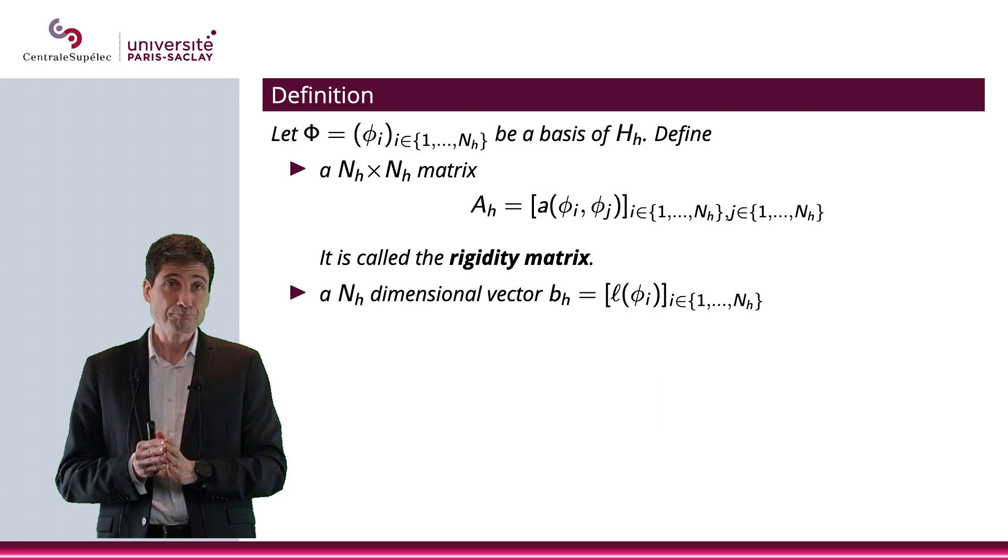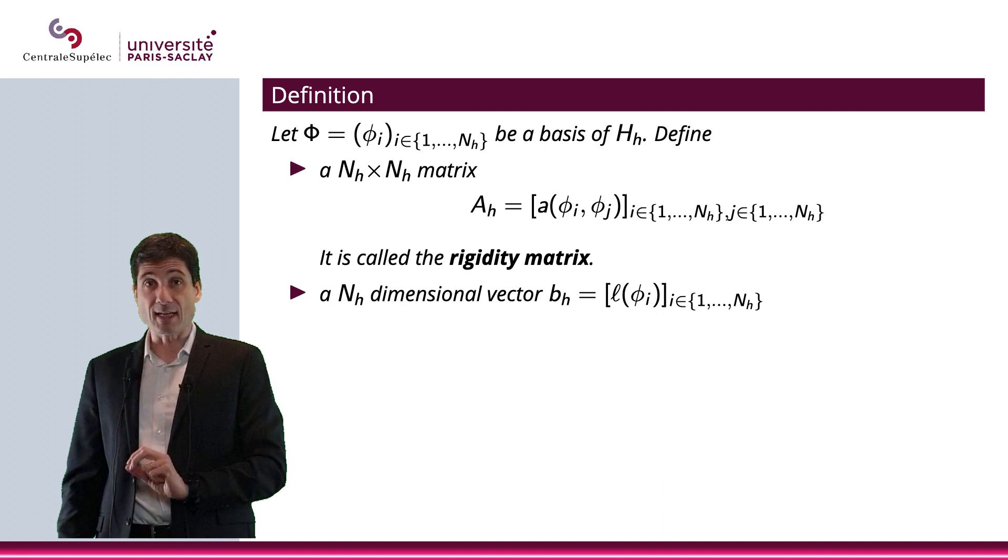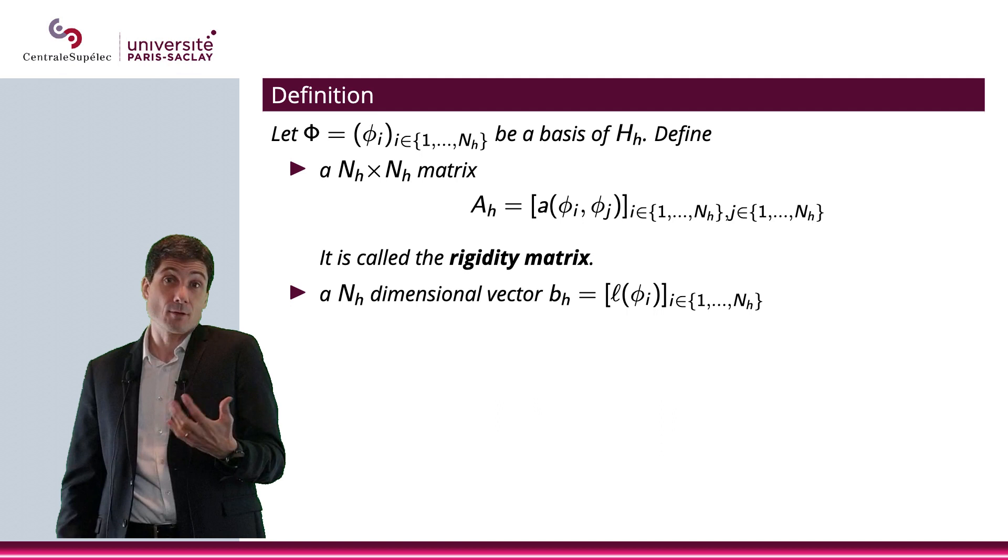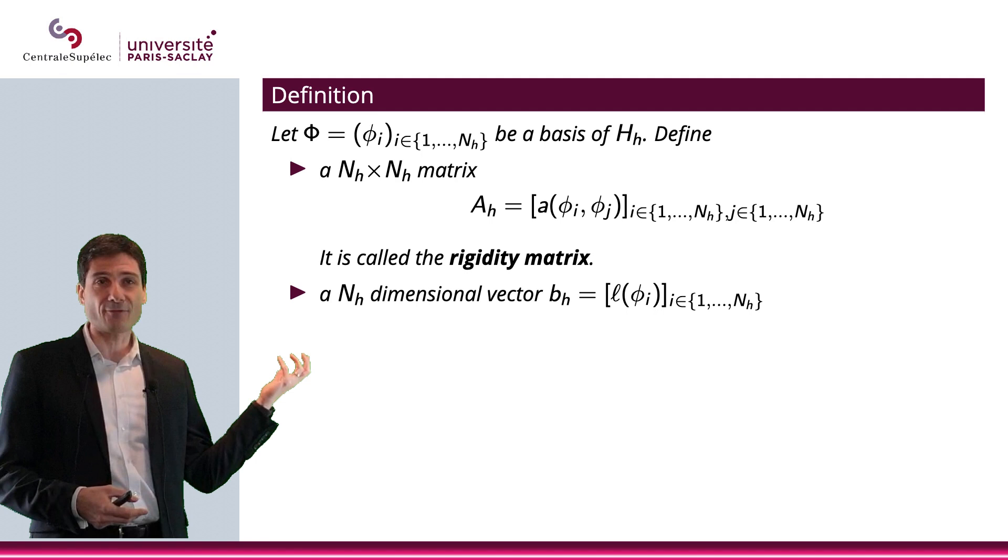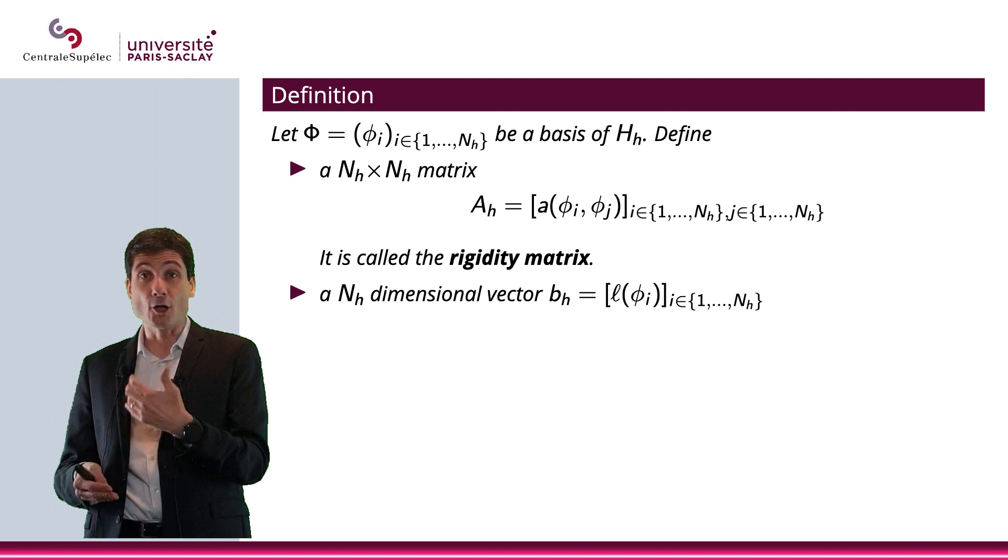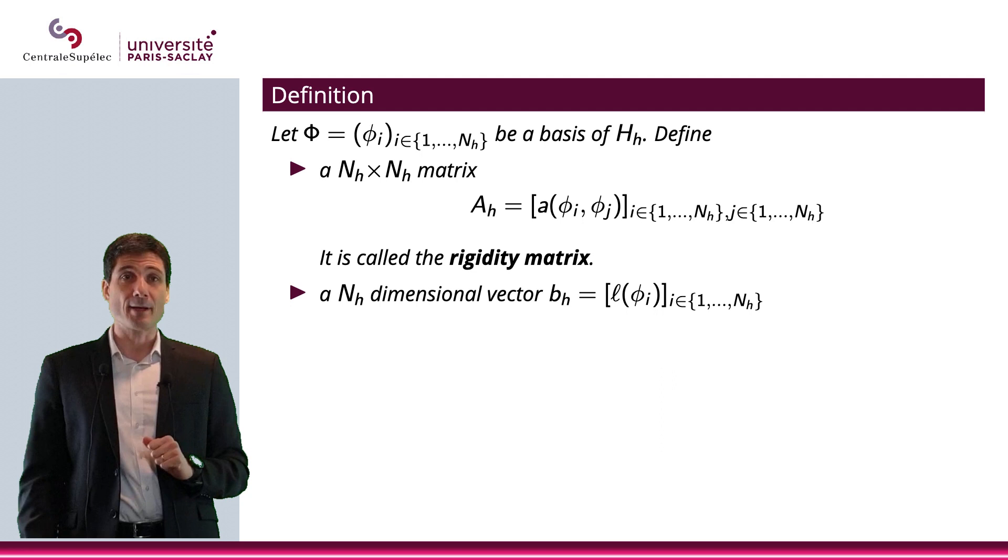So, we have defined this matrix, and I would like to emphasize that when you know a, and a is coming from your variational problem, so obviously you know your variational problem, so when you know a and when you know your basis φᵢ, then you know this matrix Aₕ. It's not an unknown. You completely know this matrix. So, that is the rigidity matrix. Again, you know it. You can compute it, if you prefer.